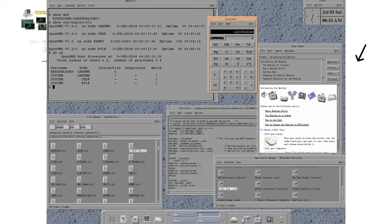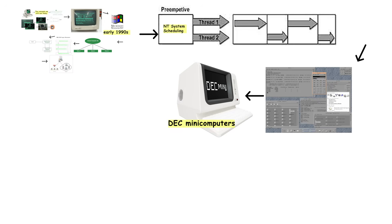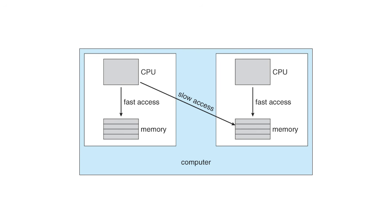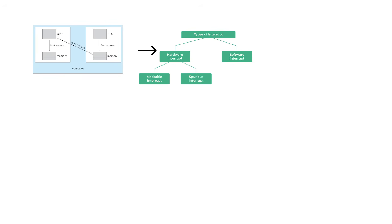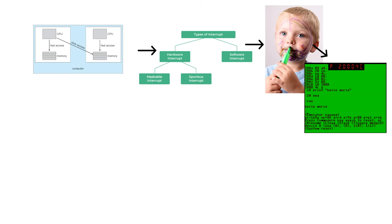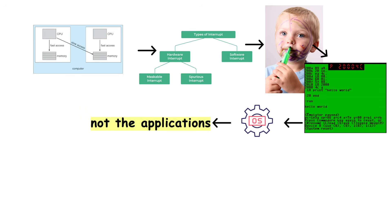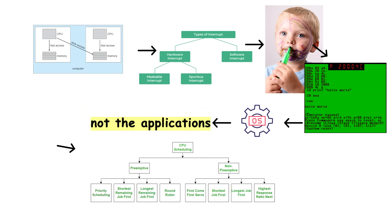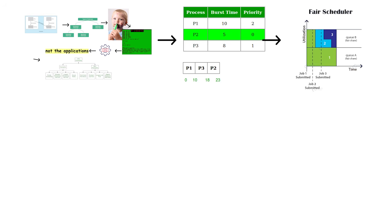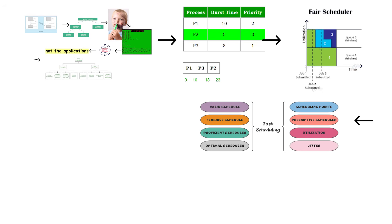VMS, the operating system for DEC minicomputers, set the standard for reliability and uptime. Level 4 systems introduced preemptive multitasking — instead of programs voluntarily yielding CPU time, the operating system forcibly interrupts them on a schedule. This prevents one misbehaving program from hogging resources and freezing the entire system. These systems also introduced sophisticated scheduling algorithms: priority-based scheduling, fair scheduling, and real-time variants that guaranteed critical tasks would execute within strict time limits.